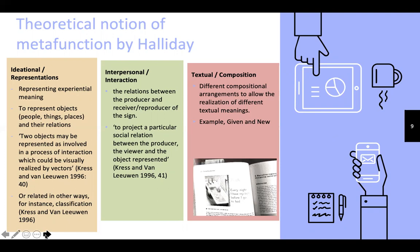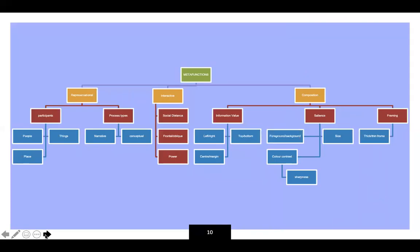For composition, we look at the arrangements of elements to allow different kinds of textual meanings — for example, given and new, ideal or real. There are three meta-functions in multimodality just like systemic functional linguistics. Under representational, we have two components: participants — which can be people, place, and things — and process types, which are narrative and conceptual. Narrative is the process of doing or happening, while conceptual is the process of being.